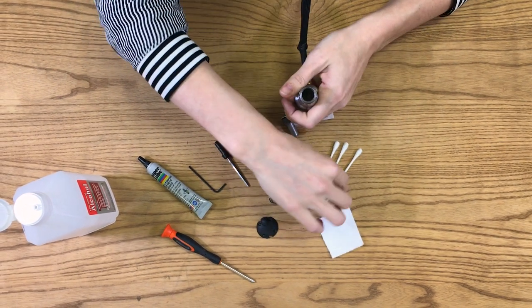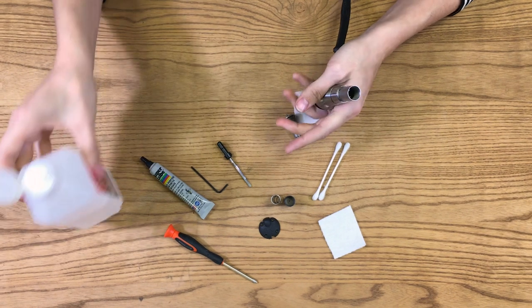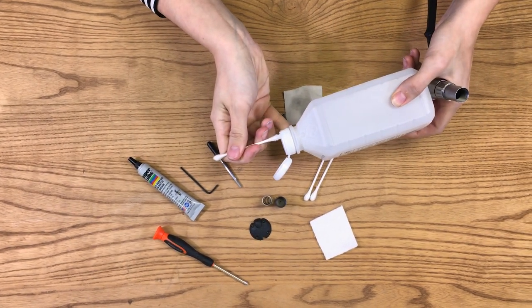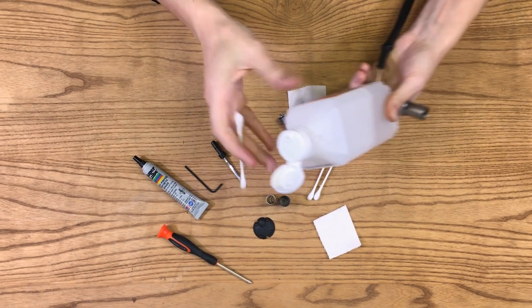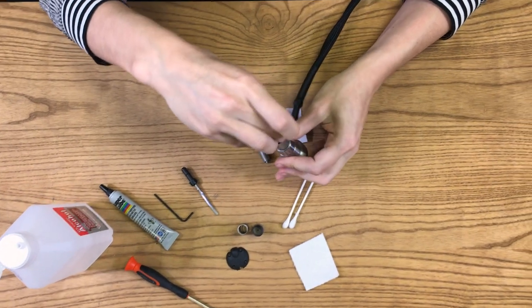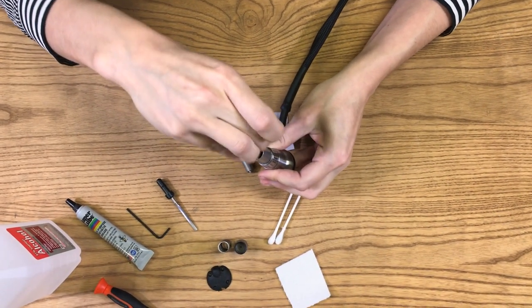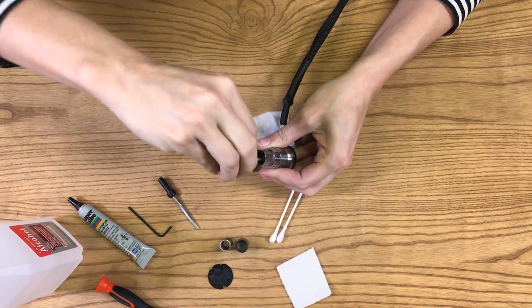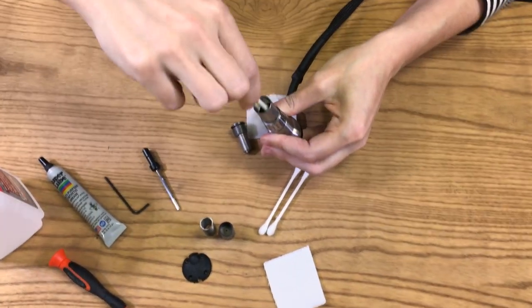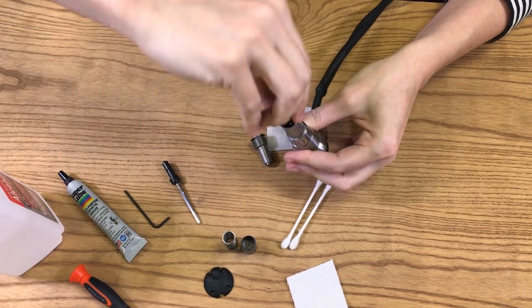And then for the inside, you're going to use a q-tip. Put a little bit of alcohol on it and just clean down inside of the barrel. See how nice and clean that is?